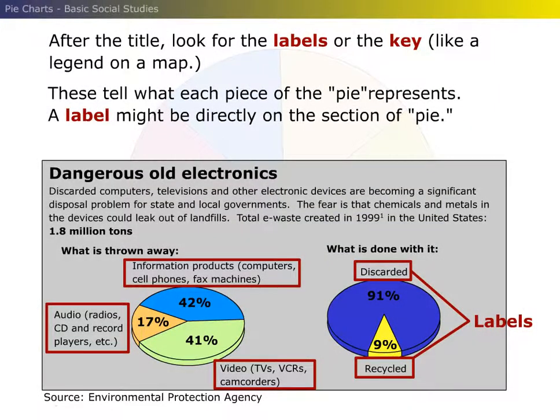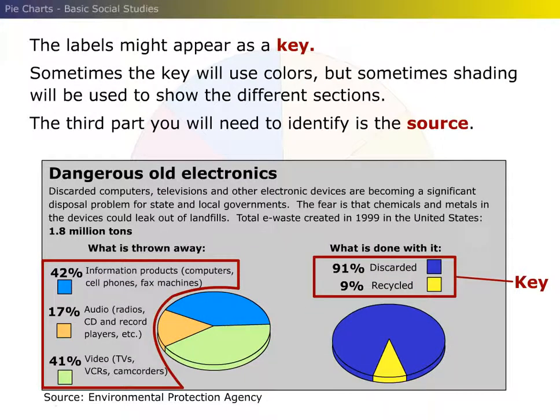After the title, look for the labels or the key, like a legend on a map. These tell what each piece of the pie represents. A label might be directly on the section of pie, or the labels might appear as a key. Sometimes the key will use colors, but sometimes shading will be used to show the different sections.